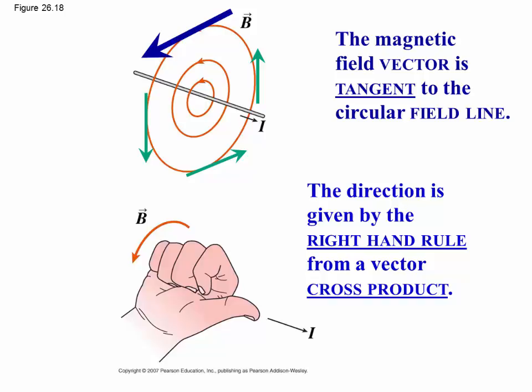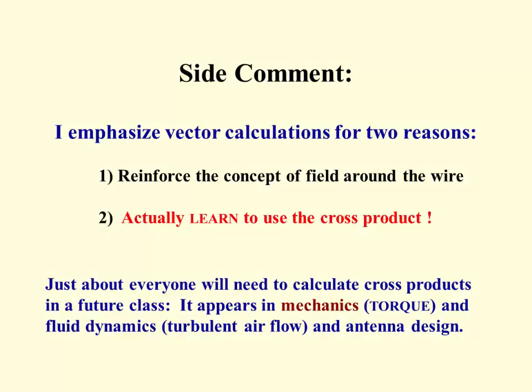That right-hand rule comes from a vector cross product. As an aside, I emphasize the vector calculations of magnetic fields for two reasons. One is just to reinforce the concept that the field does go around the wire. But the other is to actually learn to use the cross product. Everyone taking this class will need to calculate cross products in a future class.